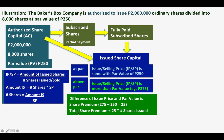The difference between the par value of 250 and the selling price of 275 — which is 25 — is called the share premium. This 25 is the share premium per share. If you multiply that by the number of shares issued, you get the total share premium.